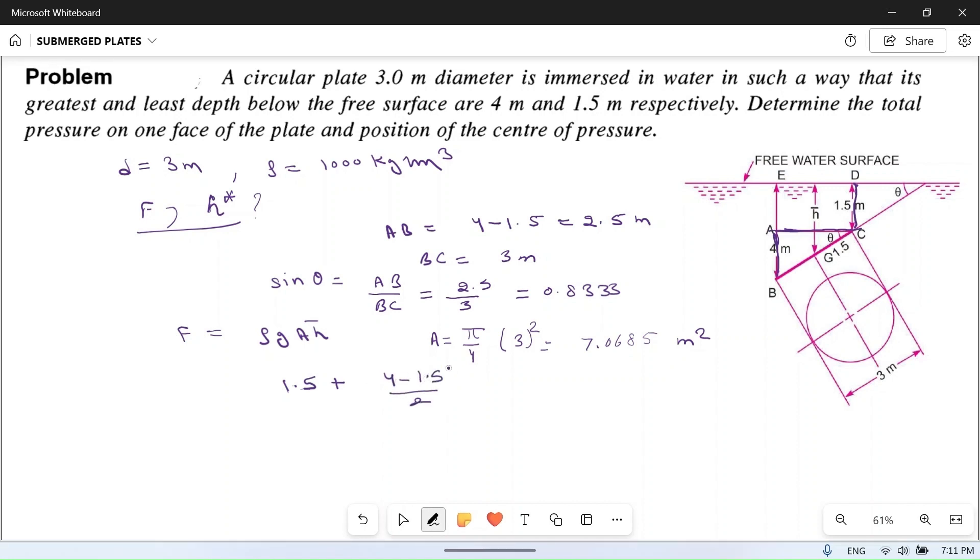It is equal to 1.5 plus 2.5 divided by 2, which is equal to 1.5 plus 1.25, which is equal to 2.75 meters. This is the value of h bar.